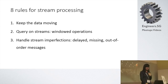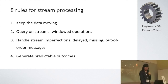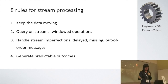Rule three: handle stream imperfections — delay, missing, and out-of-order messages from a data source that you can't control. The framework itself should handle these imperfections or have a mechanism to cope with them. Rule four: generate predictable and correct outcomes no matter what happens to the message stream. The framework should support fault tolerance and recovery, including the ability to replay when encountering faulty or out-of-order messages.